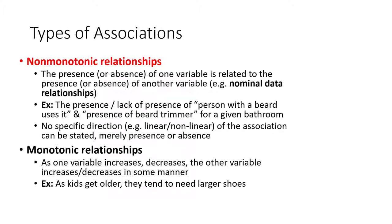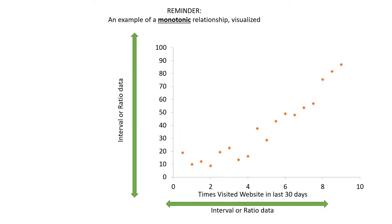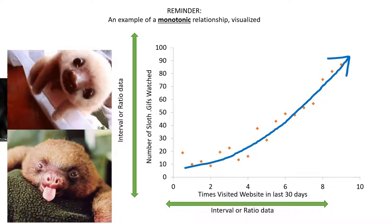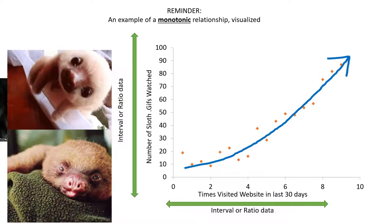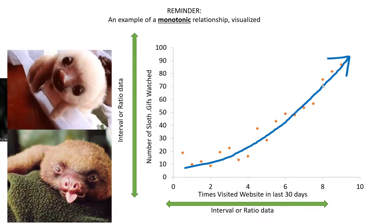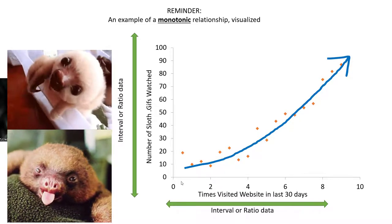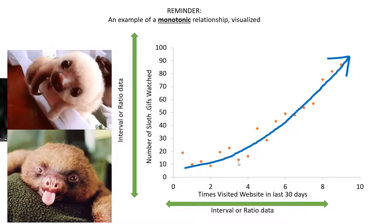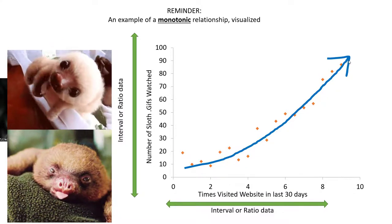Monotonic relationships are the types of relationships where we have increasing or decreasing levels because we're dealing with interval or ratio level variables. As a reminder, this is an example of a monotonic relationship. On the x-axis, we have the number of times someone visited our website in the last 30 days. Each dot represents someone we are tracking. On the y-axis, we have the number of sloth gifs they watched on our website. We can see there's a monotonic relationship because as the number of visits increases, the number of sloth gifs watched also increases.